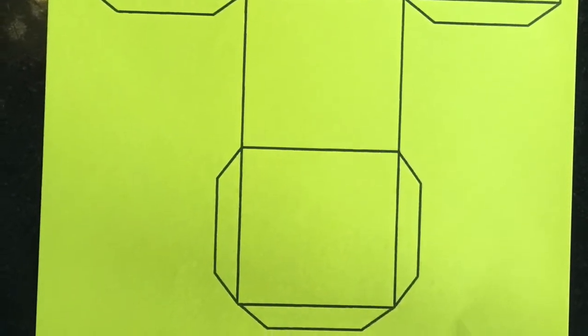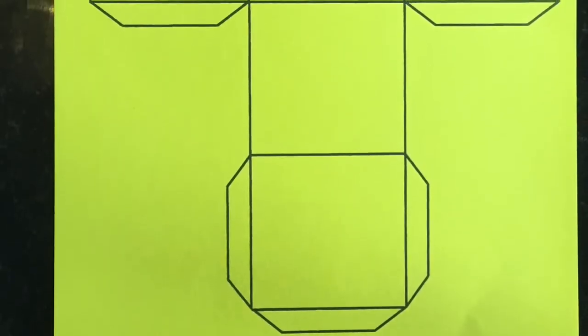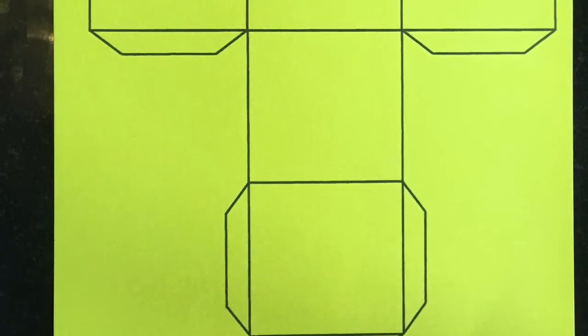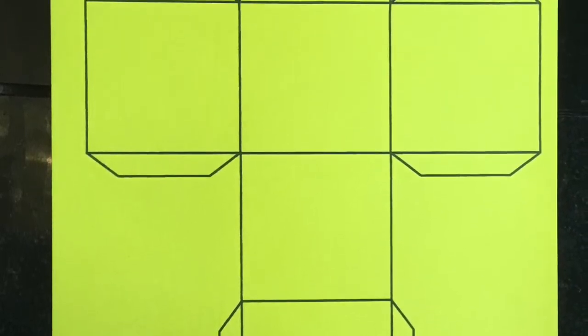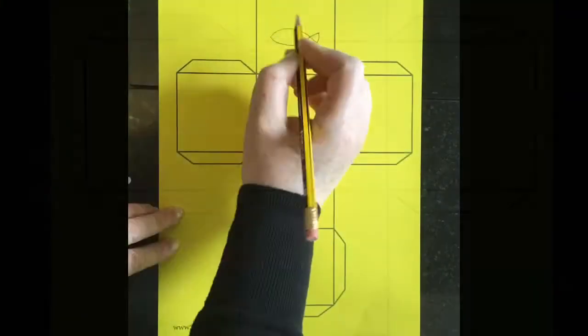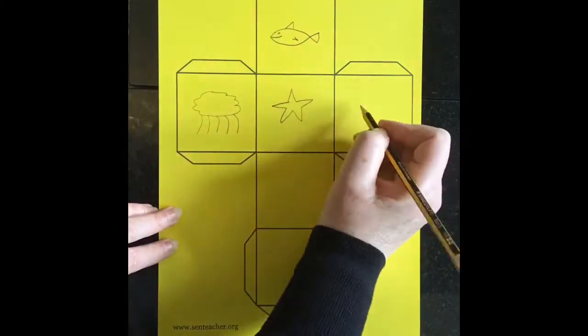As you can see, today we're going to make story cubes. You have a template in your PowerPoint, so print that onto card at least two times because we want at least two dice to play this game. So let's get on with it. To start your story cube, you need to draw a picture in each of the six boxes.